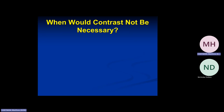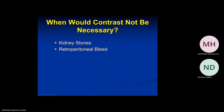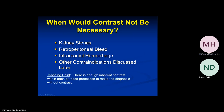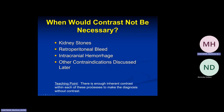When would contrast not be necessary? For CT there are certain indications where you don't need to give contrast and giving contrast may actually hinder your diagnosis. High-yield information: if you're looking for a kidney stone, there's enough inherent contrast in those kidney stones — you do not need to give contrast. Similarly, if worried about a retroperitoneal bleed or a head bleed, the first step is a non-contrast head CT to check for hemorrhage. The teaching point: in many instances there's enough inherent contrast that you do not need additional intravenous contrast.